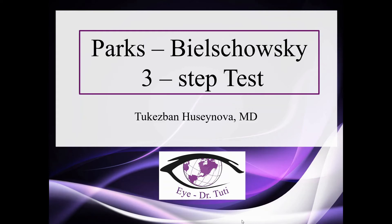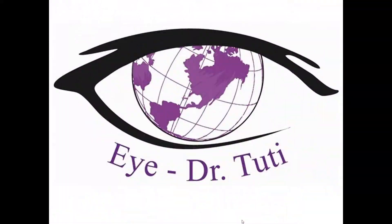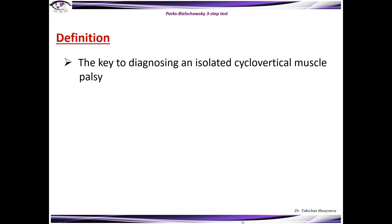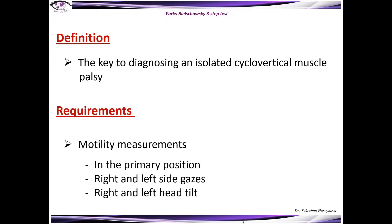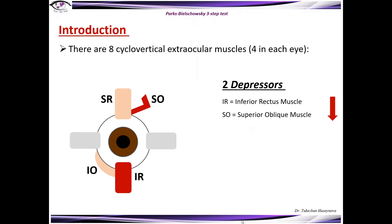Welcome back to my next video. Today I'm going to be presenting Park-Bielschowsky's 3-step test. This test is the key to diagnosing an isolated cyclo-vertical muscle palsy. What we need for that is just a motility measurement in the primary position, right and left side gaze, and right and left head tilt.